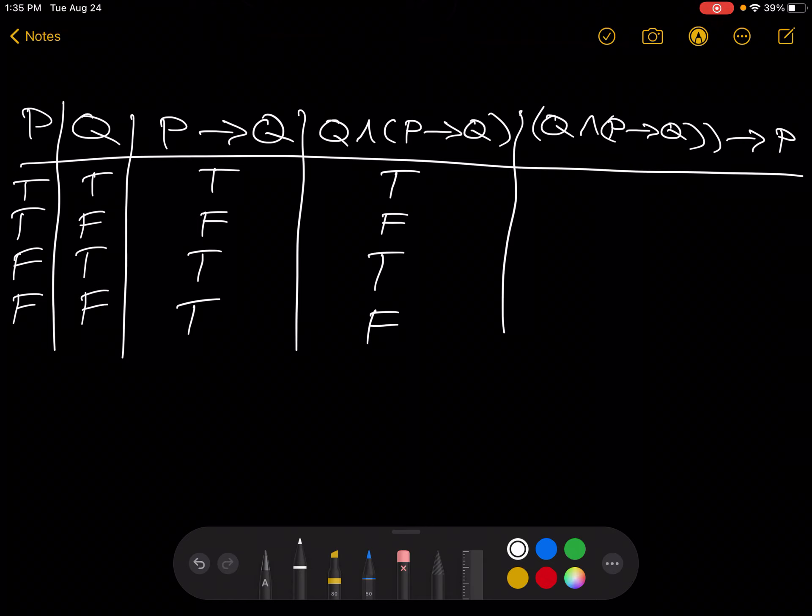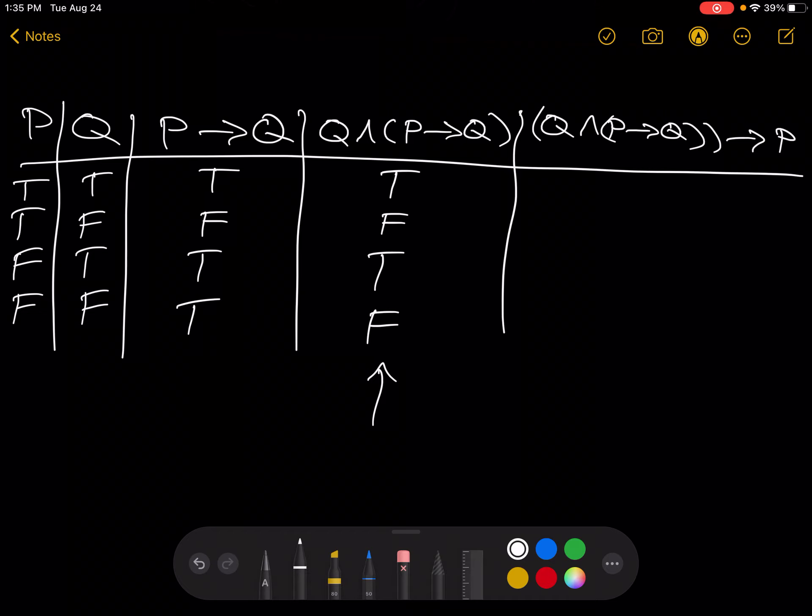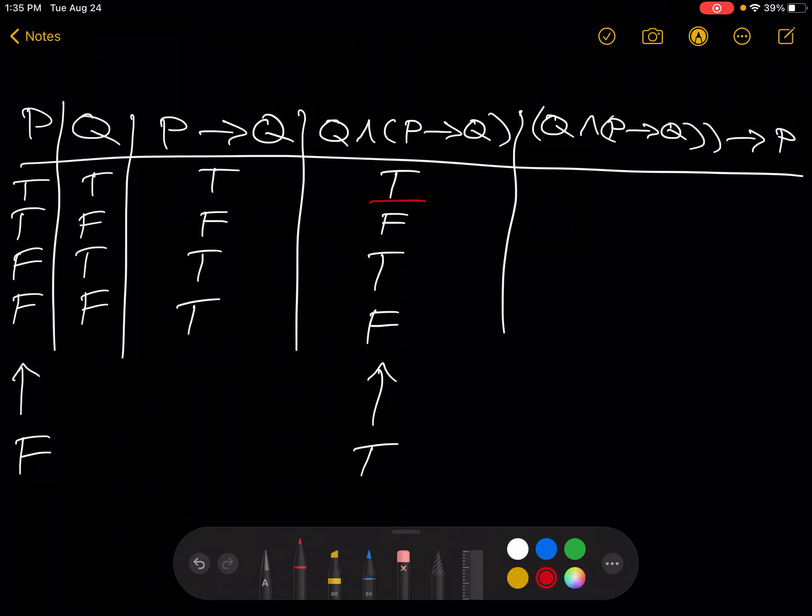And now, lastly, we want to look at thinking of this as the first thing. And then, the second thing is P. We want to say, when is this first thing implies the second thing false? It's only false when we have true here and false there. So, let's see. We have true, true.